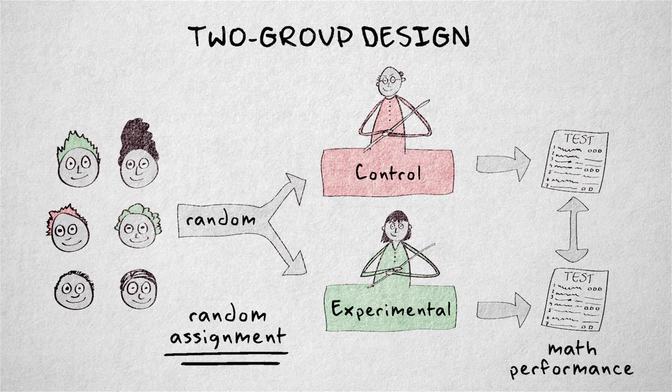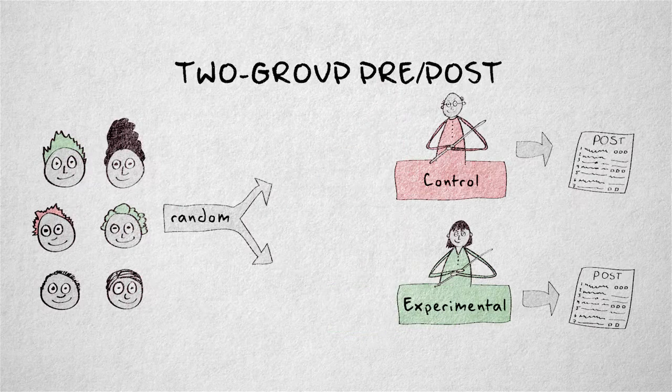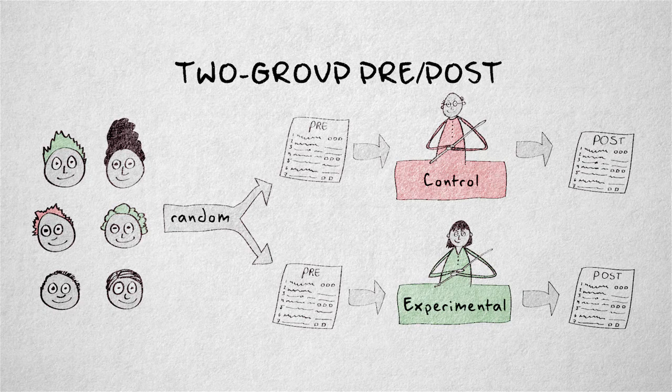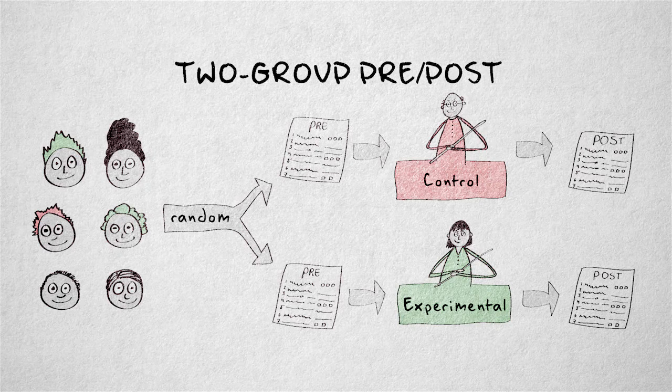Of course, in small groups, randomization doesn't always work. In such cases, it might be wise to use a two-group pretest-posttest design, which adds a pretest of the dependent variable before exposure to the independent variable.